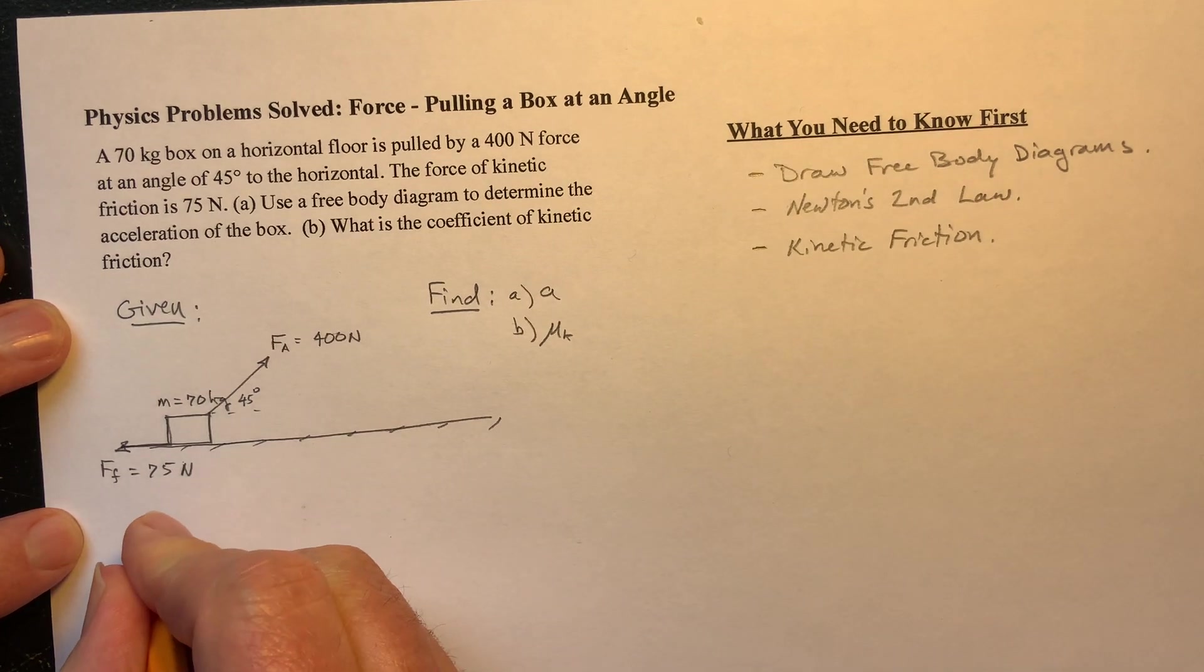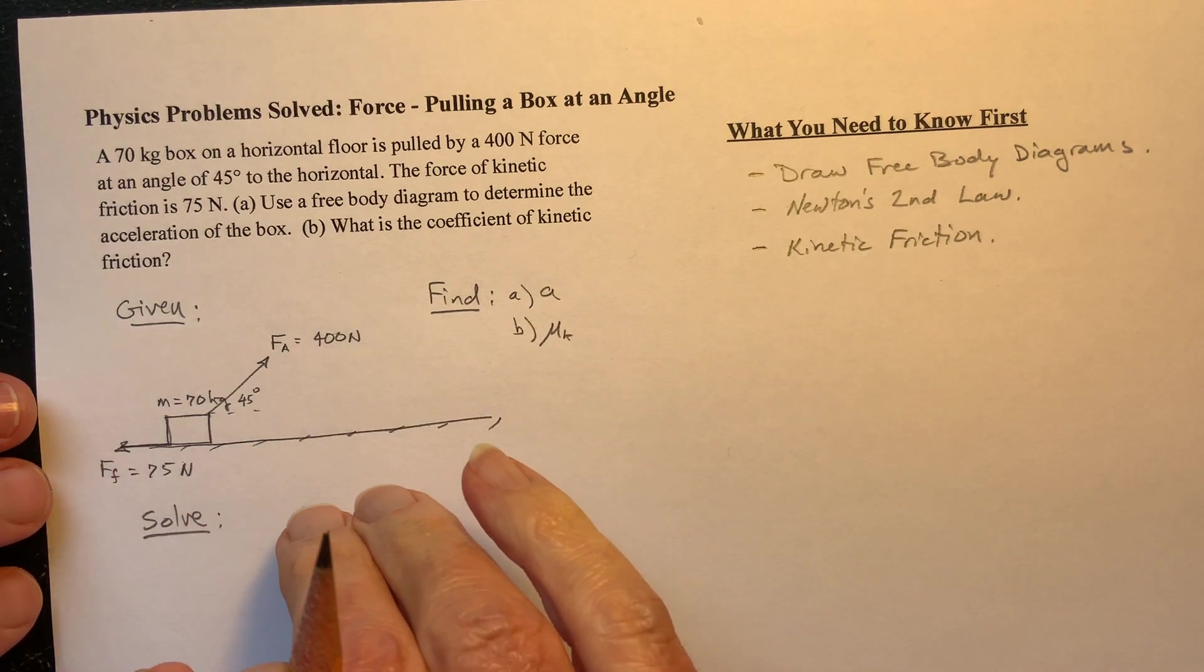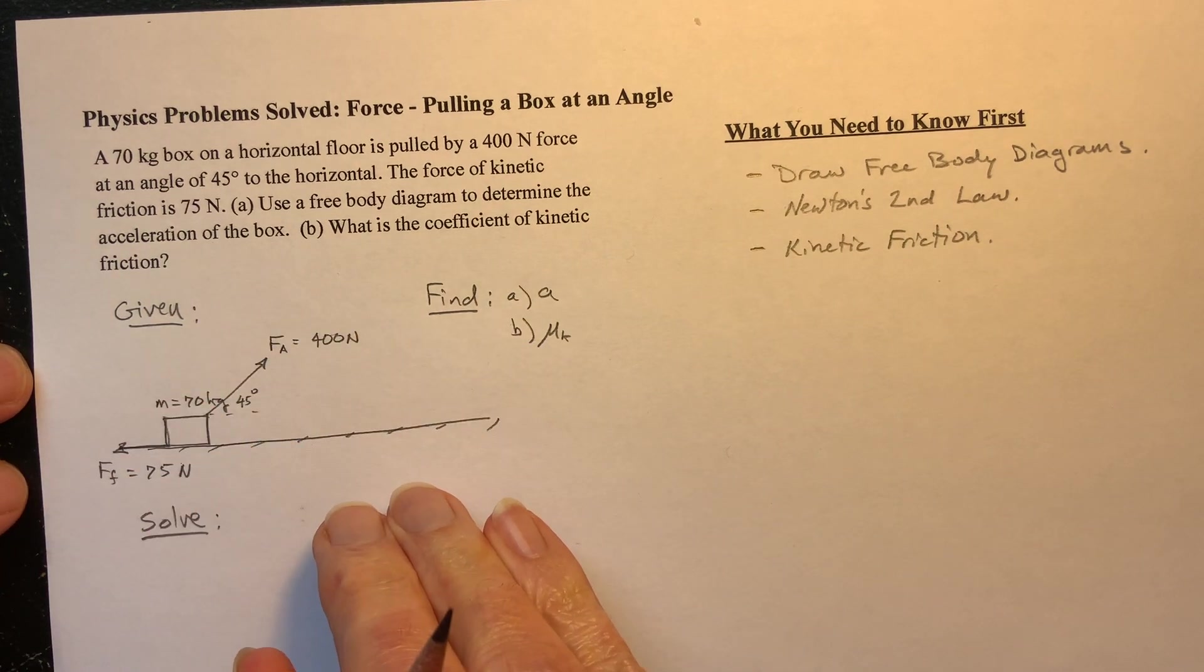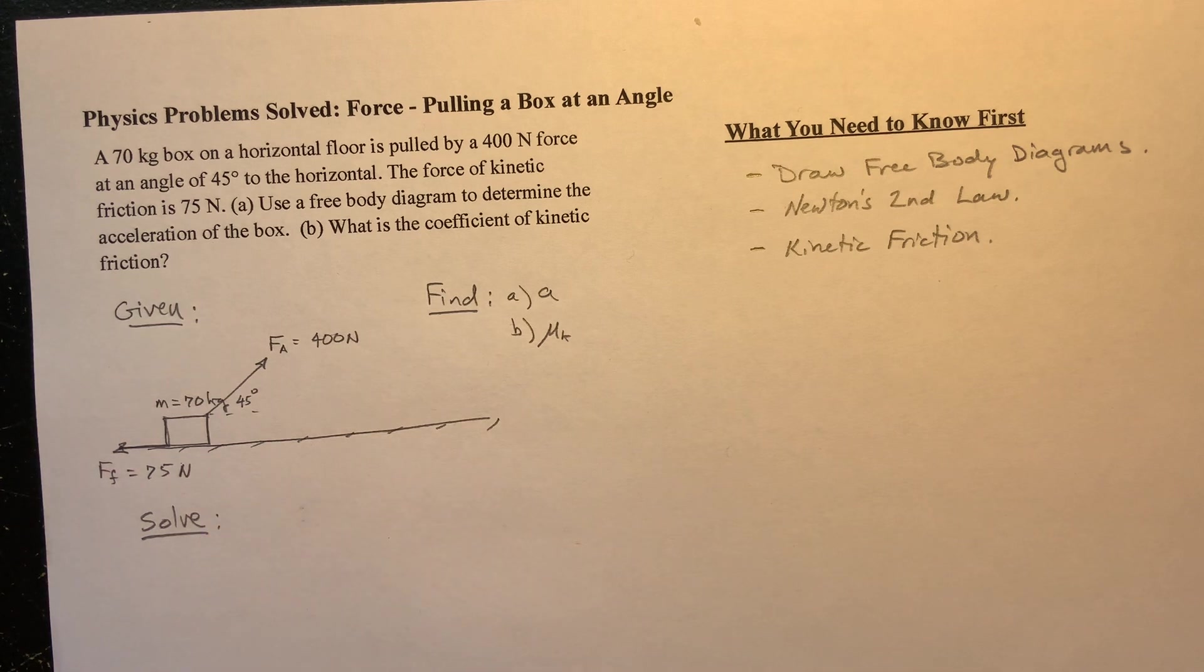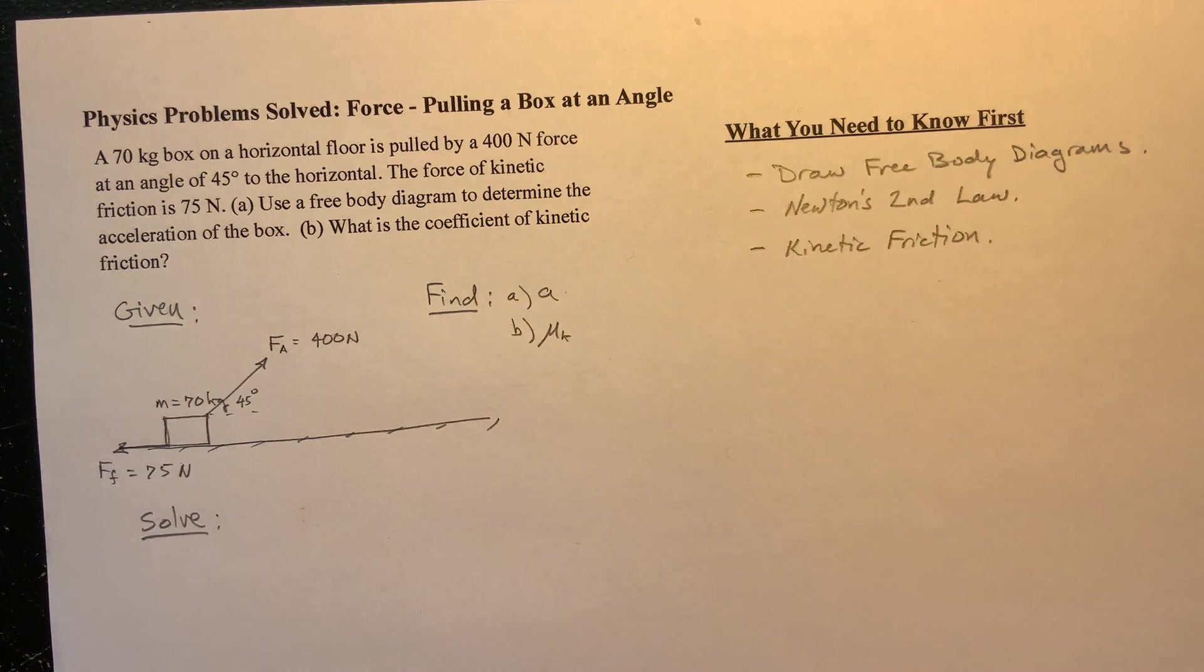Well, we want to know what is the acceleration of this crate due to these forces. And then part B, we want to know what is the coefficient of kinetic friction. So let's solve it. I really encourage you to set up your problems really nicely, like this. Try, if it's appropriate, draw a picture of the problem, and then show what's given around it. Because then you really understand the problem. If you can draw a picture of it, you can get it. And then really clearly identify what you're looking to find.